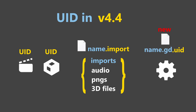So one of the two big changes with 4.4 is that scripts and shaders get an extra file associated with them which will store their UID for them. The second big change is that UIDs will now be visible and usable in the UI.